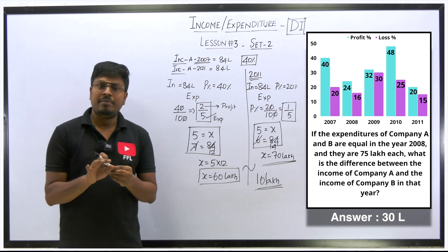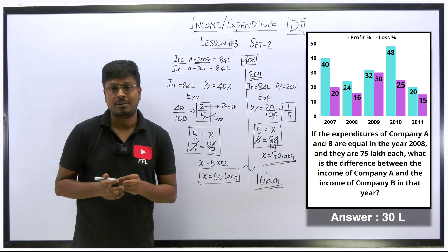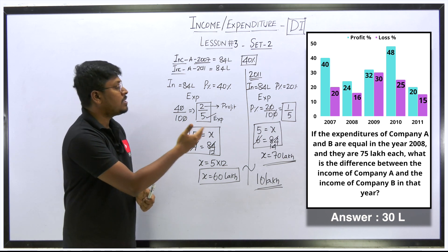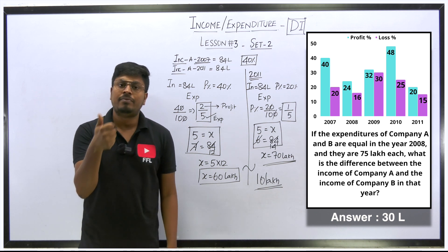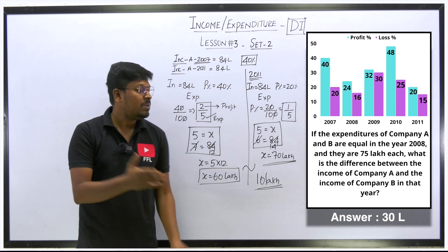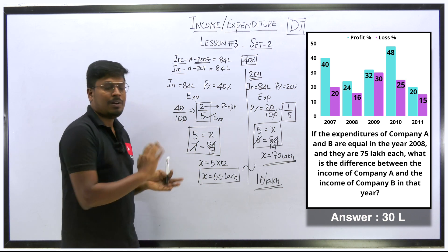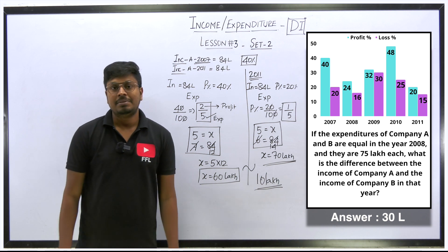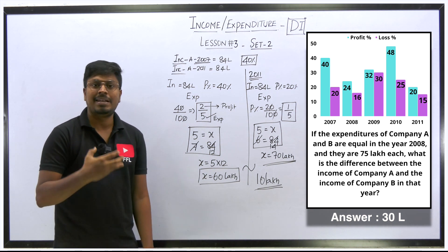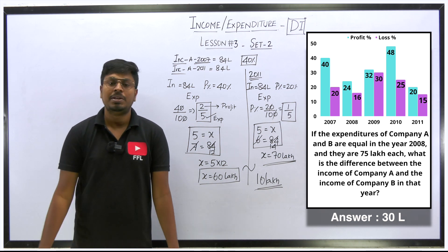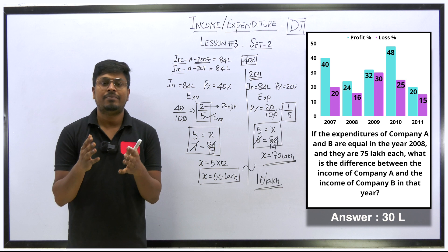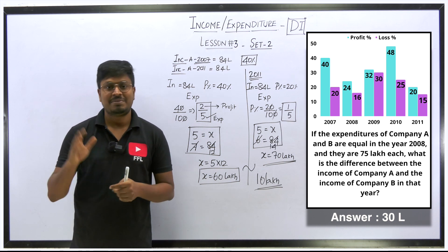That's it about this video. The concepts covered are: Q1 — finding profit using profit% and expenditure; Q2 — which value belongs in the denominator for percentage change; Q3 — finding expenditure from income and profit percentage. Even for loss values, the same approach applies — just substitute the loss value as profit. Concepts are more important. We'll solve set number three, four, five, and six with medium to difficult level questions. Thank you for watching; share with friends preparing for competitive exams.